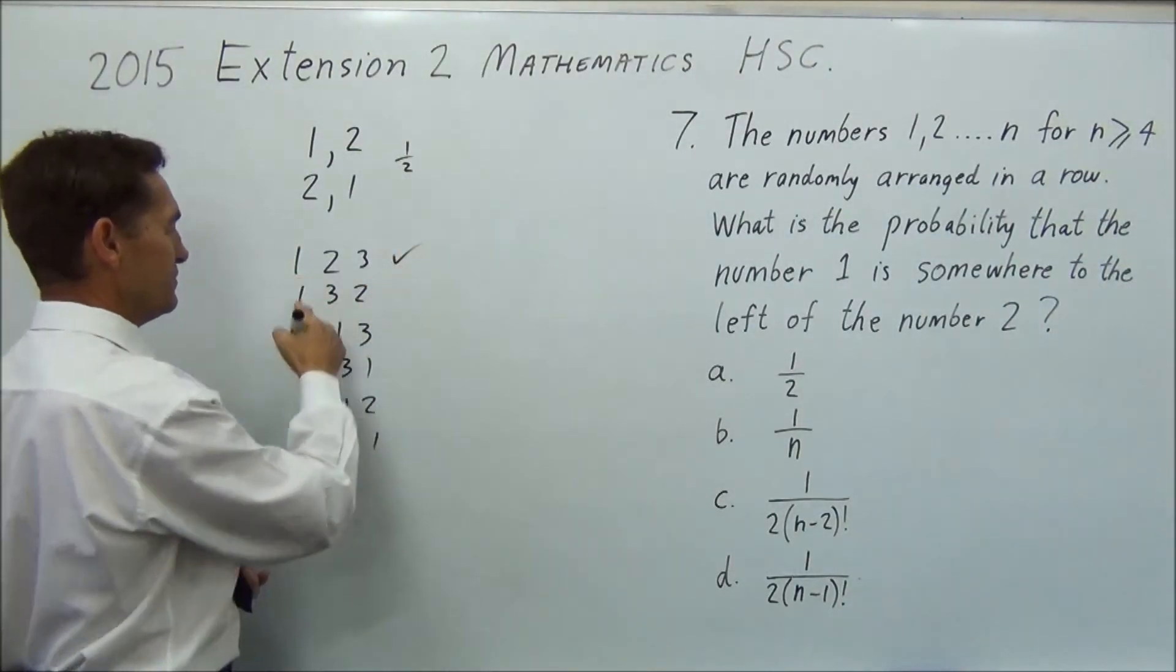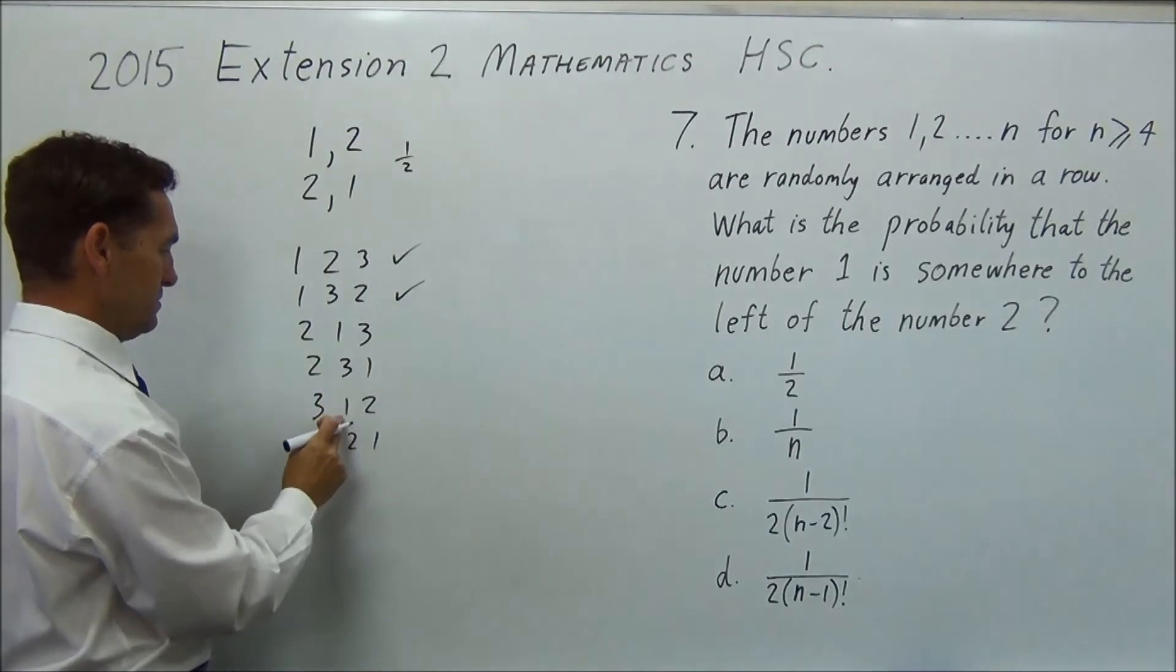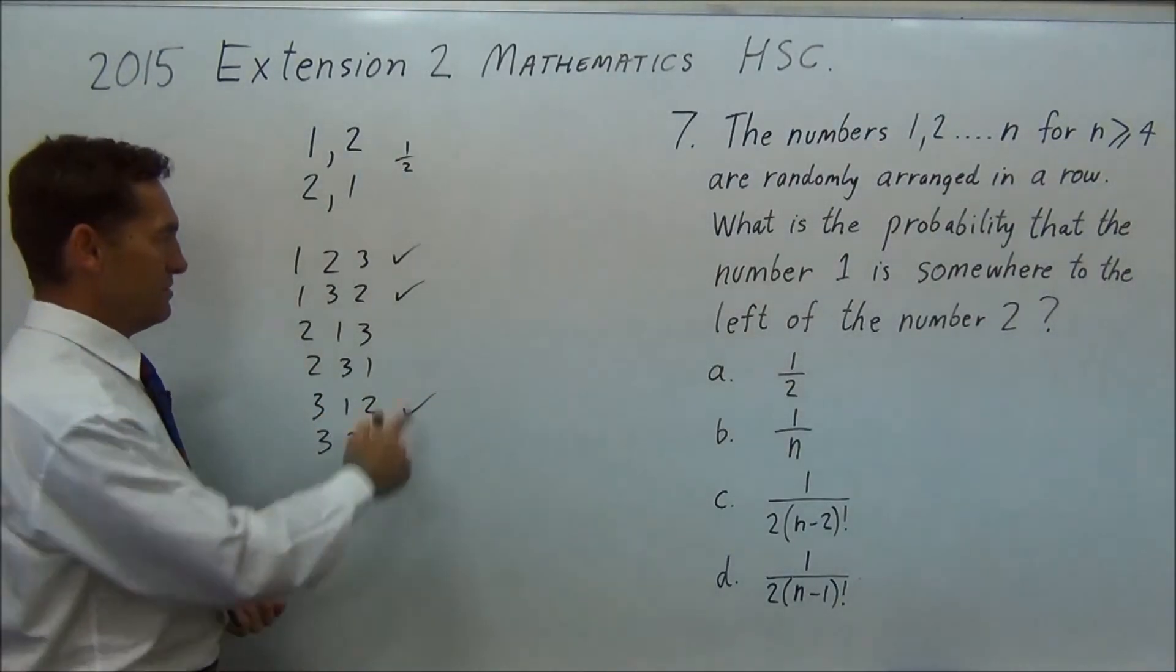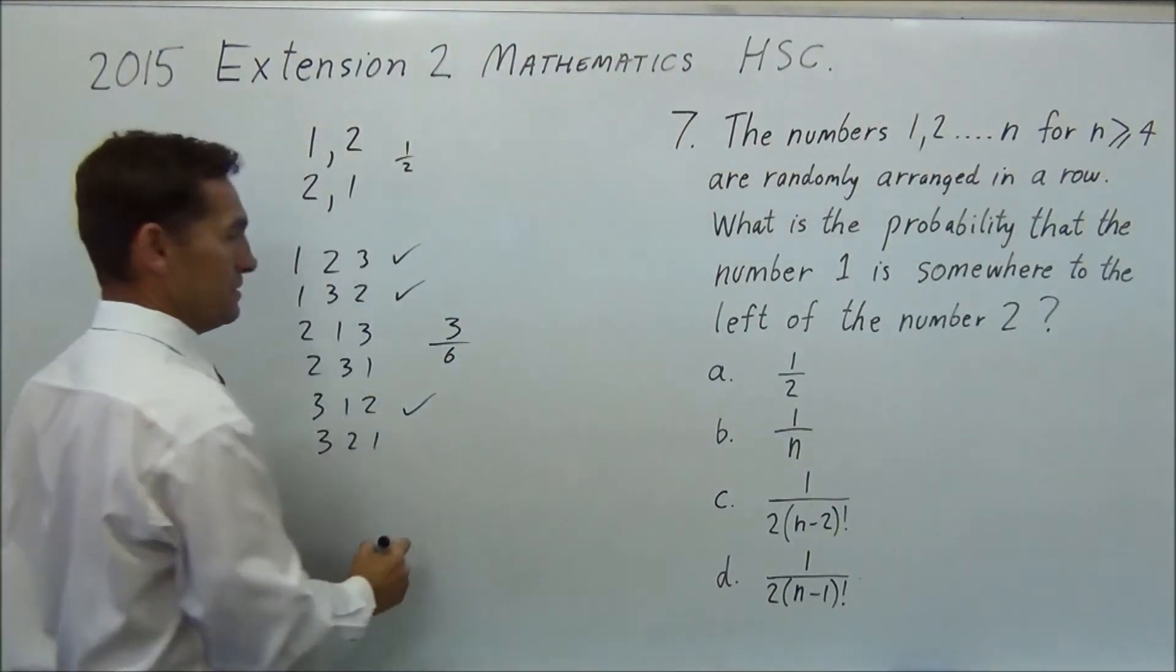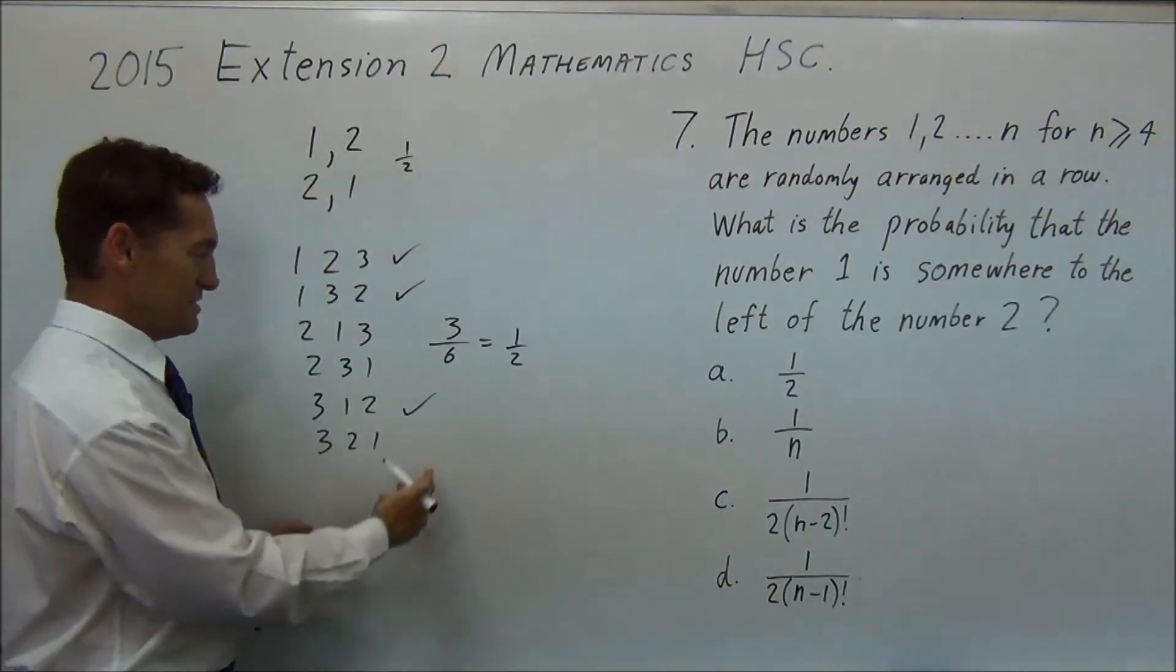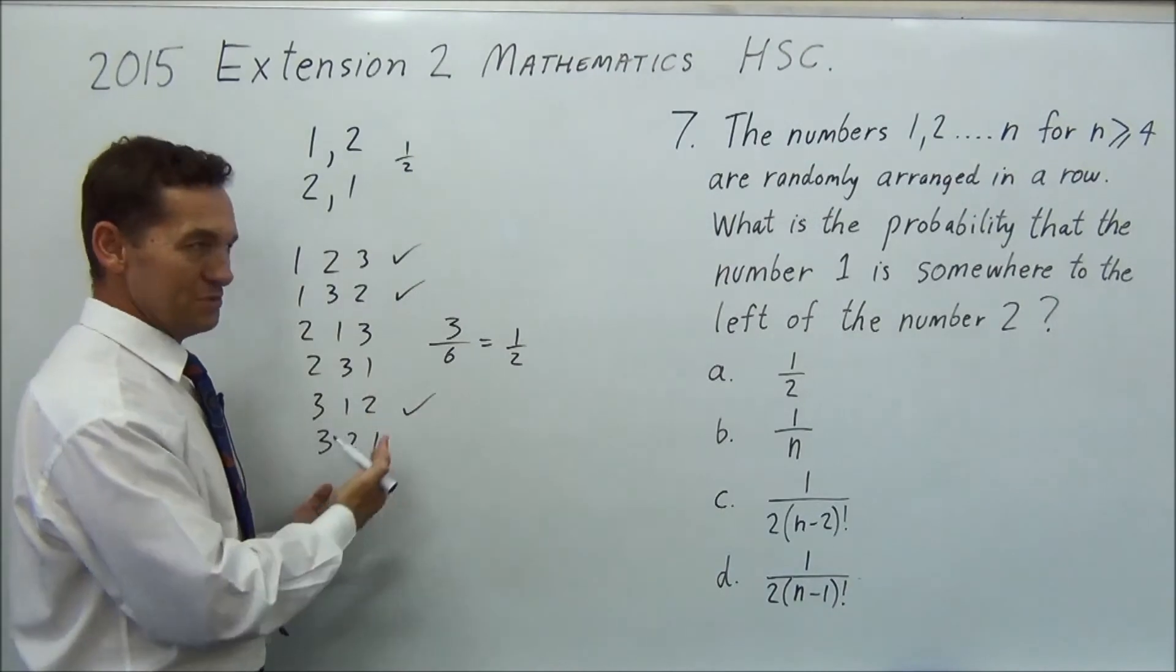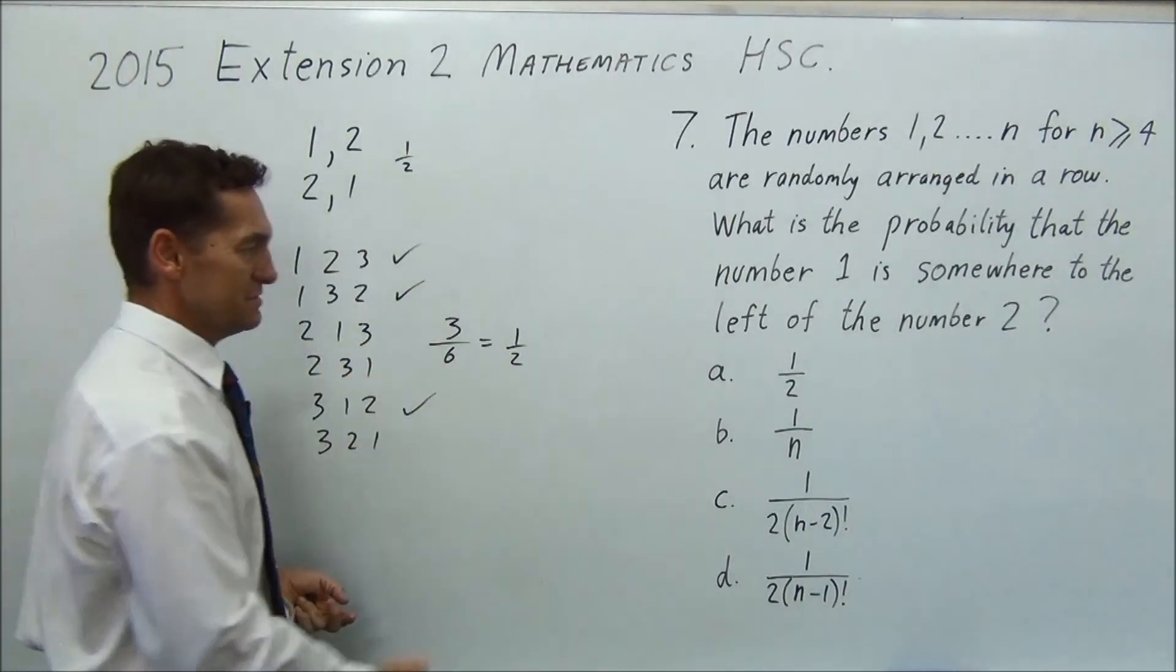How many times is 1 to the left of 2? Well, 1's on the left there. 1's on the left there. 1's on the left there. No, no. 1's on the left there. No. Look at that. 1, 2, 3 out of 6. A half. And guess what happens if you do it a fourth time or fifth time? It's always going to be logically half the time on this side and half the time on that side. So your answer's A.